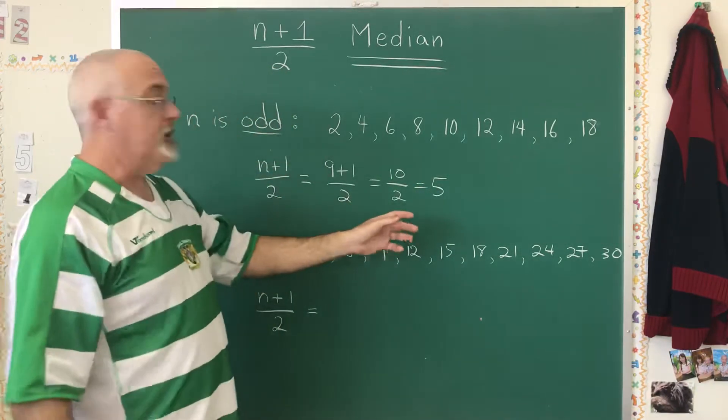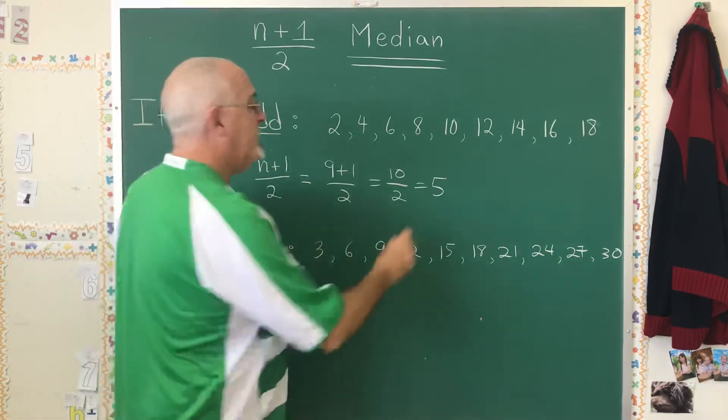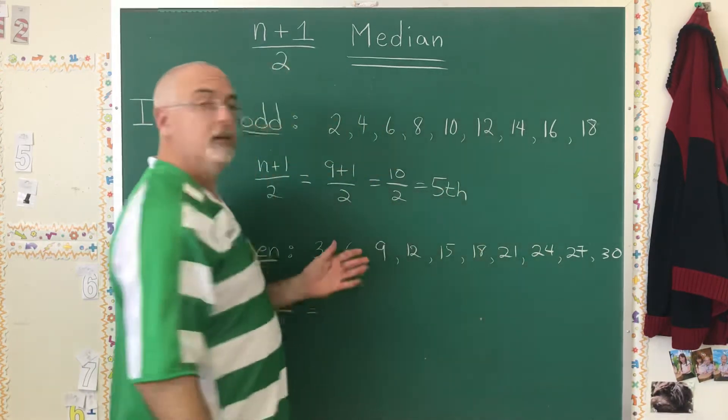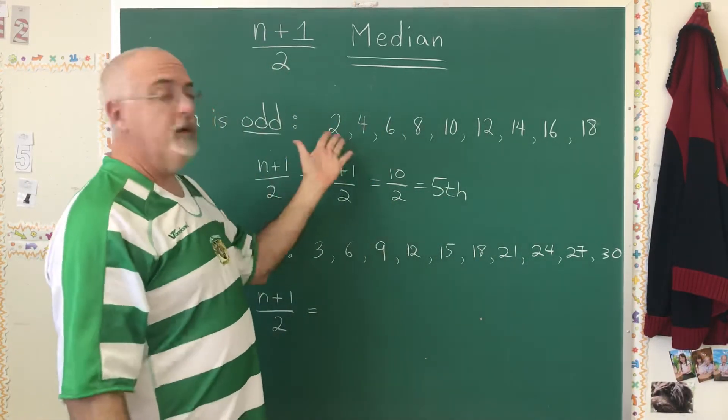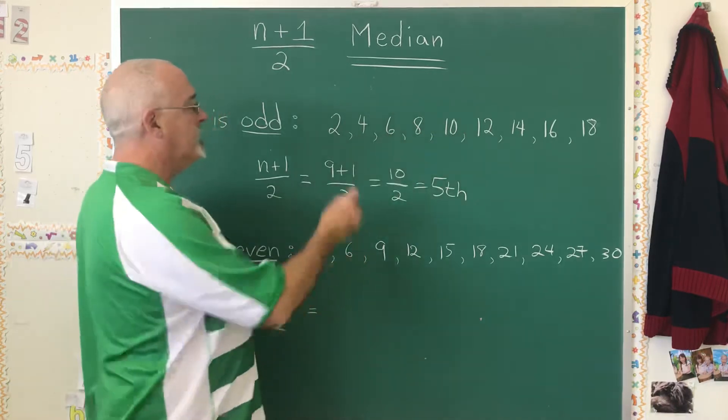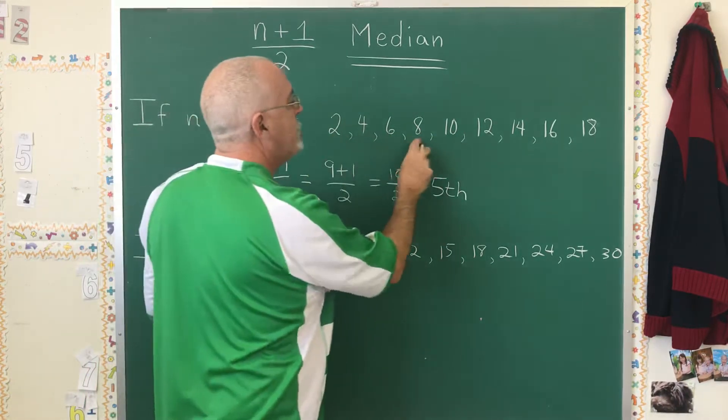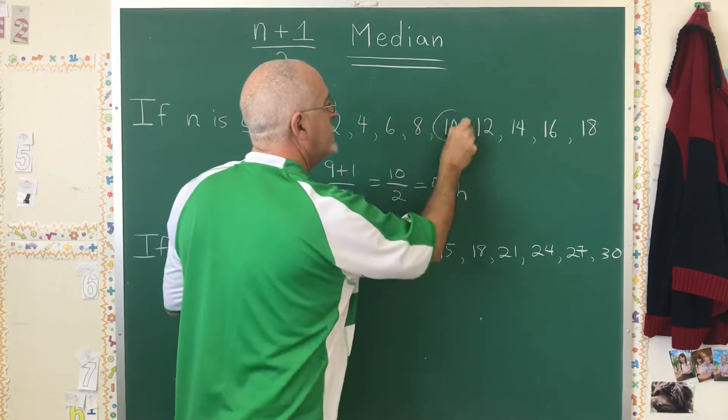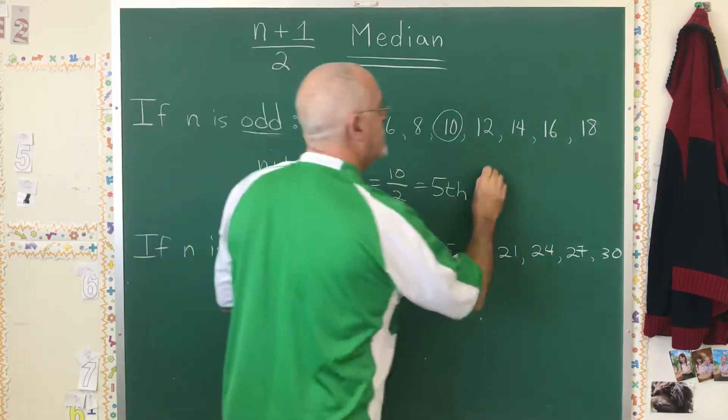But the median is not 5. The median is the fifth value in the data. So starting from the smallest and moving towards the largest: 1, 2, 3, 4, 5. My fifth value is this 10. The median in this case is 10.